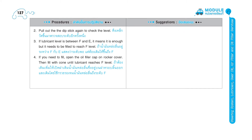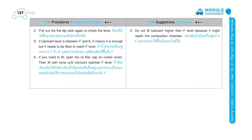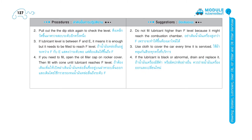Suggestions: 2. Do not fill lubricant higher than F level because it might reach the combustion chamber. 3. Use cloth to cover the car every time it is serviced. 4. If the lubricant is black or abnormal, drain and replace it. 5. Use lubricant according to specification in the manual of that car.